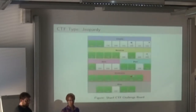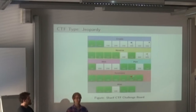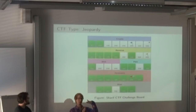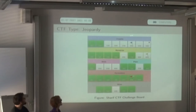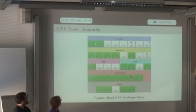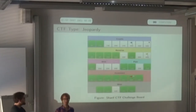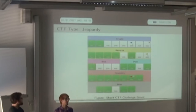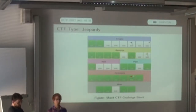Basically there are two capture the flag modes. One is called Jeopardy — who knows the quiz show Jeopardy in the US? You have a board where you can pick a question from a certain category, and you choose how many points you get when you solve it. You have different categories like crypto, and you can get 24 points, 50 points, or whatever, when you solve a challenge. The organizers provide you with binaries, a website where you need to find a bug, or a crypto challenge. But you don't really attack other teams — you only solve challenges like small puzzles.